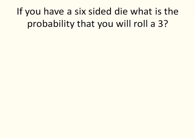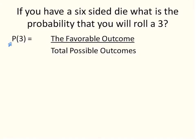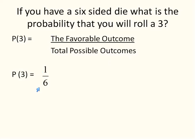Let's look at a couple of questions using theoretical probability. If you have a six-sided die, what is the probability that you will roll a three? The probability of rolling a three is written as P(3). The favorable outcomes is rolling a three — there's just one. The total possible outcomes is six, because there are six sides. So the probability of rolling a three is one out of six.